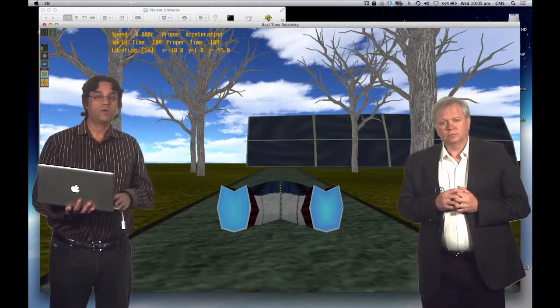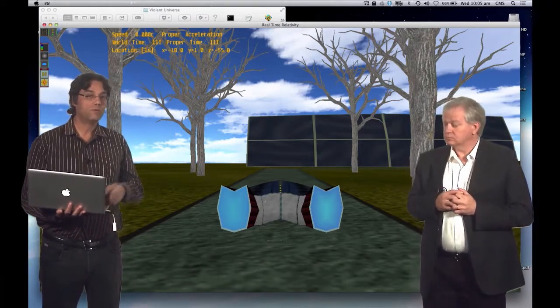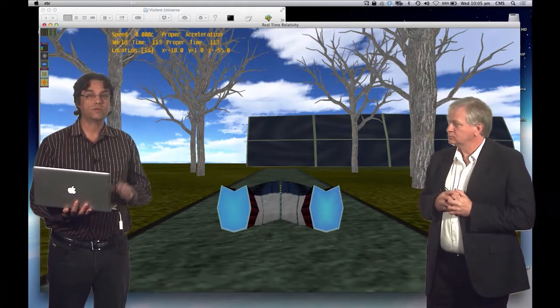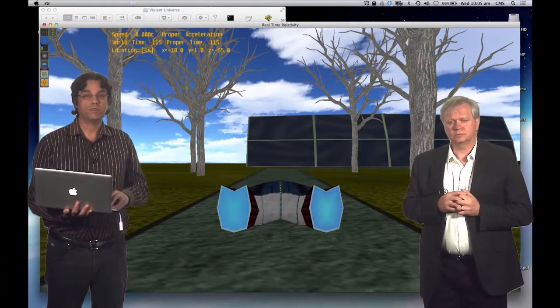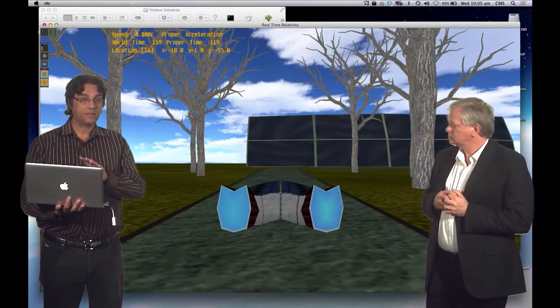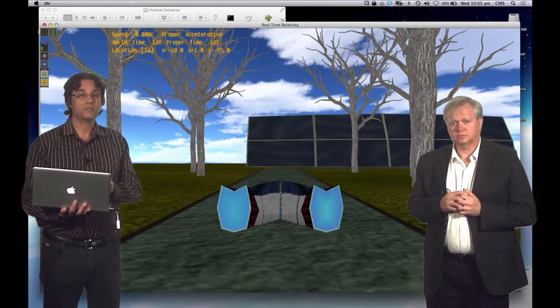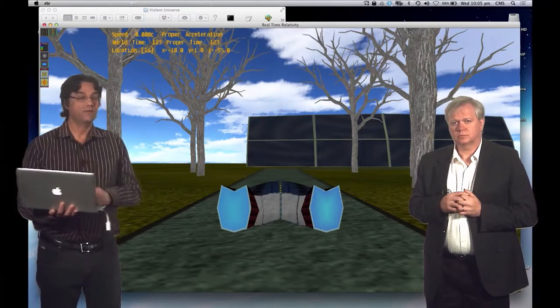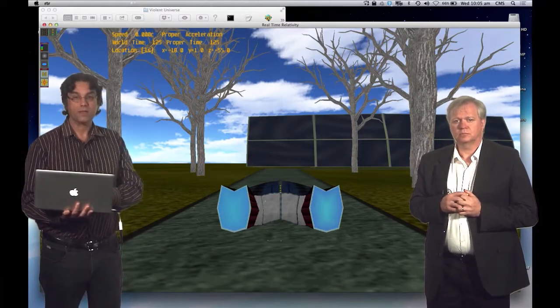So what we've got here is a little bit more complex world than the one we saw before, where we just had a building and a sign. There's all sorts of things here, but what you can see at the moment is some trees and a road. And I'm going to do exactly the same thing. I'm going to accelerate with constant proper acceleration down that road, and we'll see what we see. So here we go.